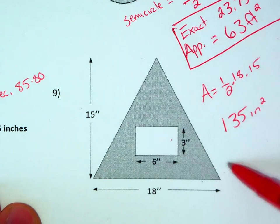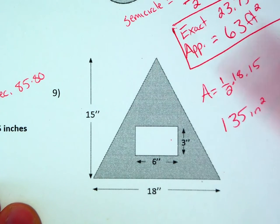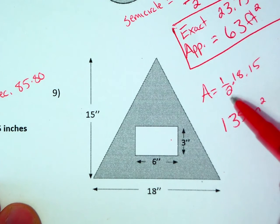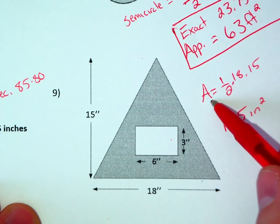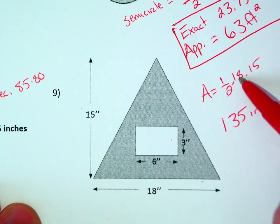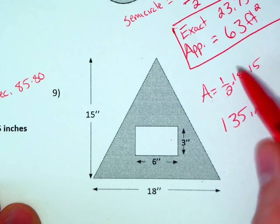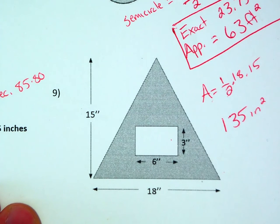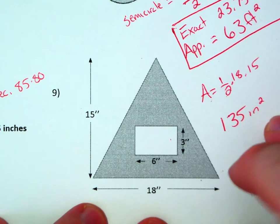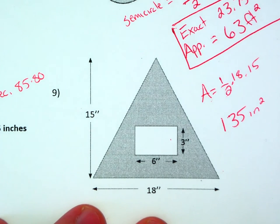We need to find the area of the entire triangle and then subtract the empty space. So I find the area of the triangle by using my formula A equals 1/2 times base times height. I substituted in 18 for the value of my base, 15 for the value of my height, and then multiplied and determined that the area of the triangle is 135 inches squared.